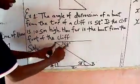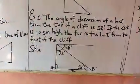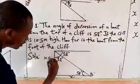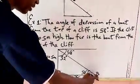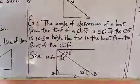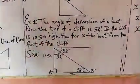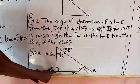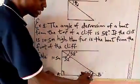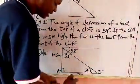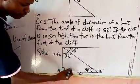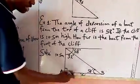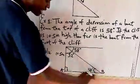The cliff is 10.5 meters high, and we want to find the distance between the boat and the foot of the cliff. Invariably, we will be looking for line AB, which we denote as X. Line AB represents the distance between the boat and the foot of the cliff.